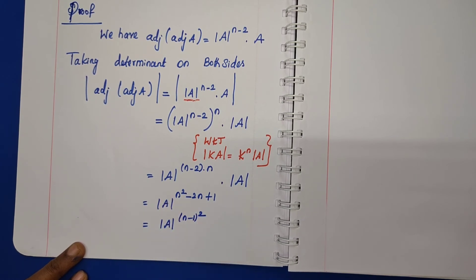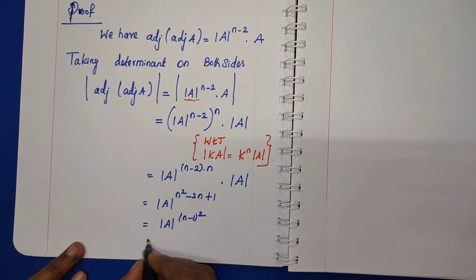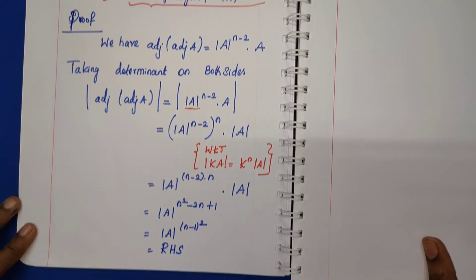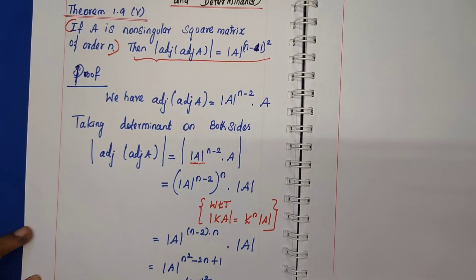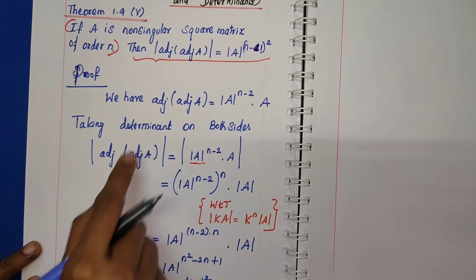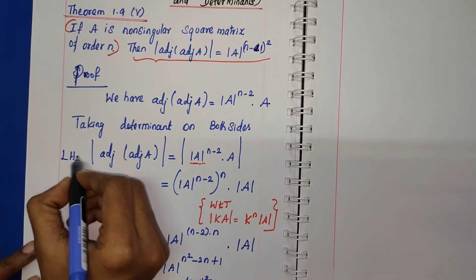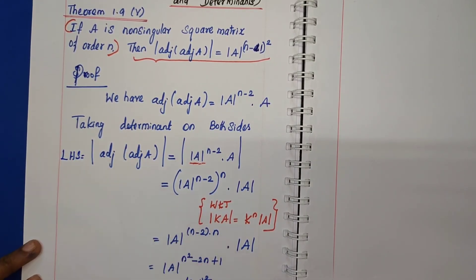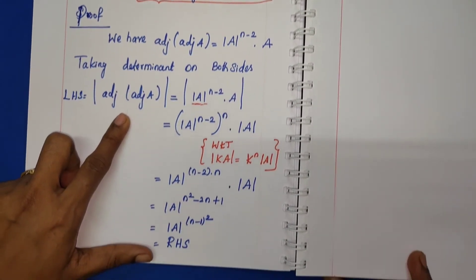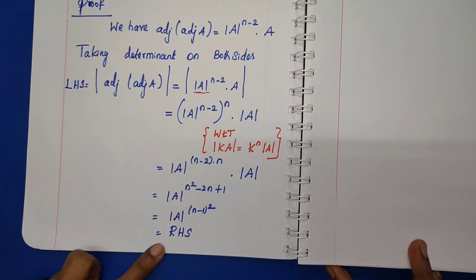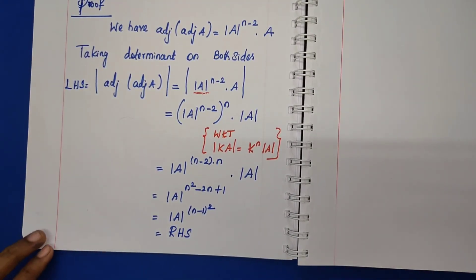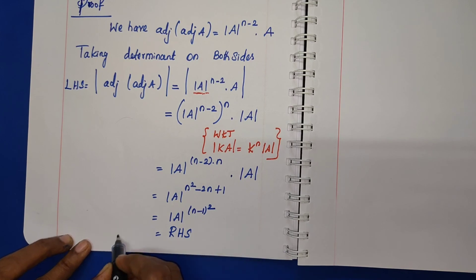Using the expansion (n-1)² = n² - 2n + 1, the result simplifies to determinant A power (n-1)², which equals the right-hand side. Hence proved.